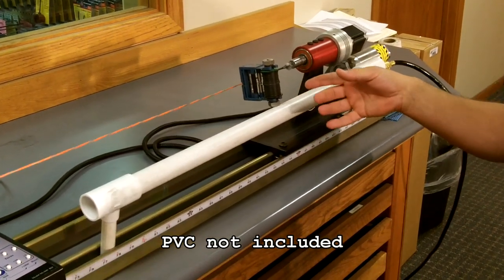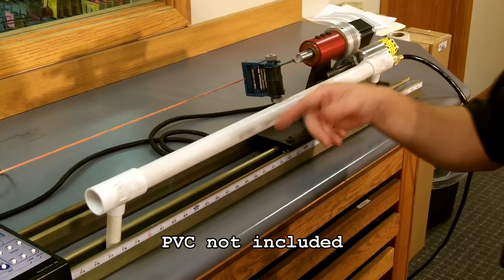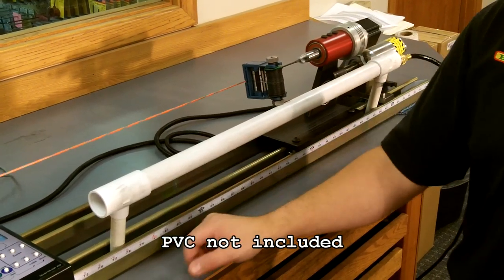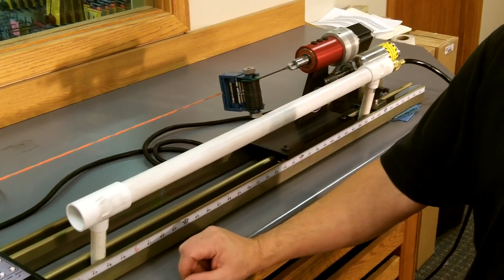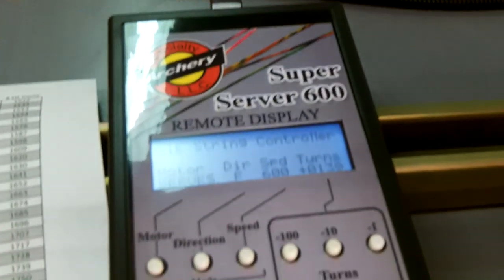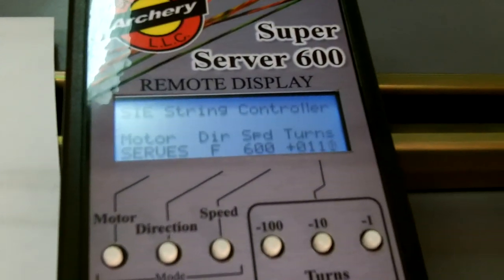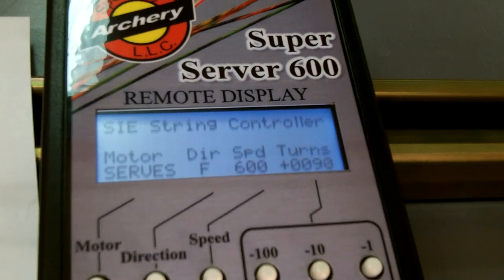It'll sit there and hold your jig spool while it serves your string. The number of turns that we programmed in, it'll count down, and when it reaches zero, it will stop the serving. I use this time to do up my packaging. I can lay up another string in this time. It's not wasted time as with other machines.